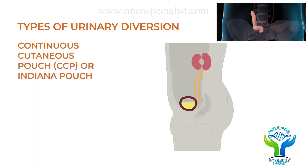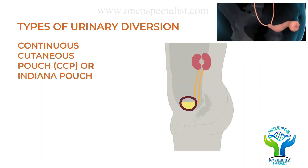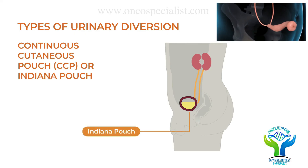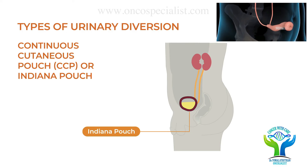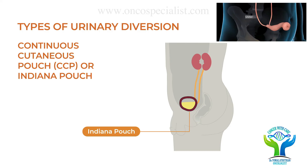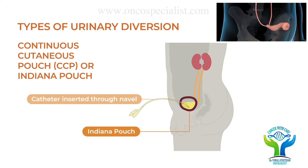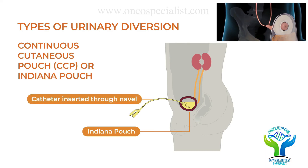The last option is a continent catheterizable pouch. Whenever the patient wants to urinate, they can insert a catheter into the stoma and by gravity drain urine outside to collect it. By all three of these techniques, we can provide a good quality of life to a bladder cancer patient.